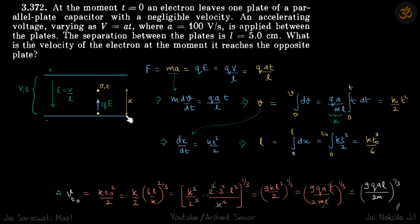We have two capacitor plates with a potential difference of V and distance between them as L. We know that the field between them will be V by L.